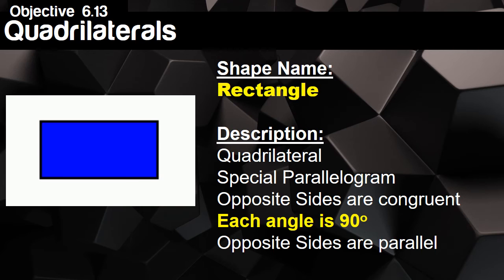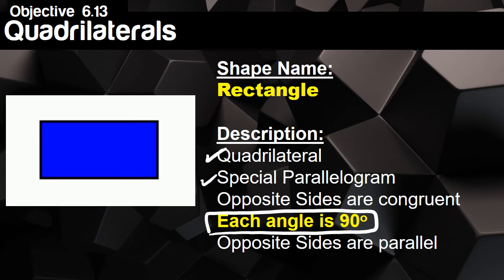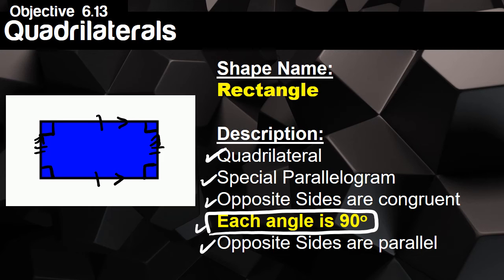Another special parallelogram is called a rectangle. In our description, this is a quadrilateral and a special type of parallelogram. What makes it special is that each angle is equal to 90 degrees. We draw little boxes in the corners to show 90-degree angles. The opposite angles are exactly the same, and we mark our opposite sides as congruent with slashes and mark the opposite parallel sides with arrows.